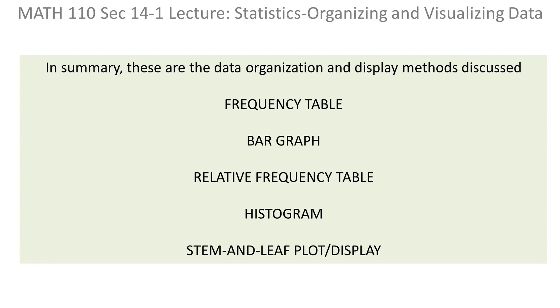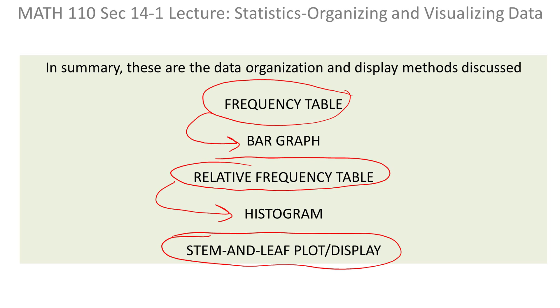So to wrap things up, just want to summarize these different ways we talked about to organize and display data. We began by talking about the frequency table and how the same data can easily be described by a bar graph. We talked about relative frequency tables and how that can be turned into a histogram. And then we discussed the stem and leaf plots. These are just a few of the many ways to display and organize data.